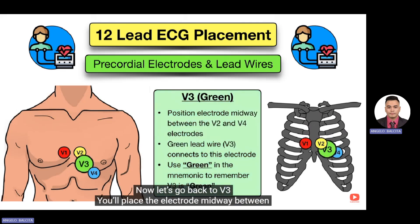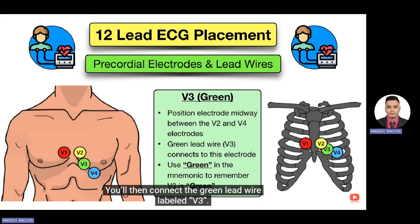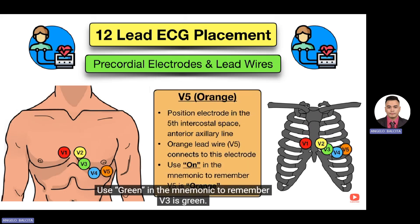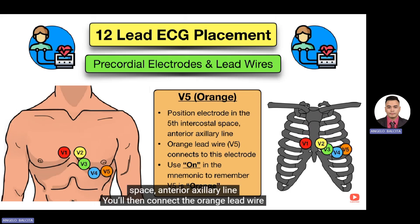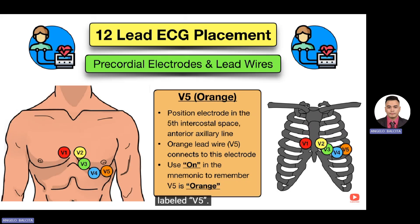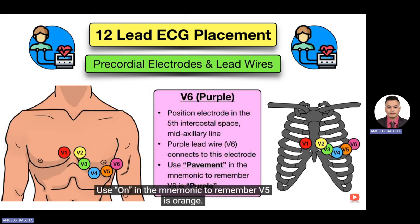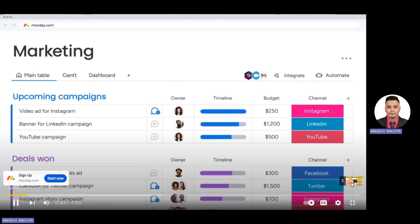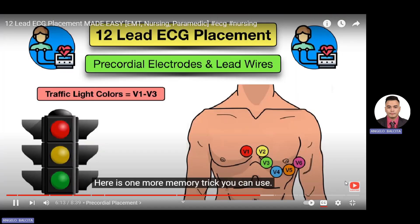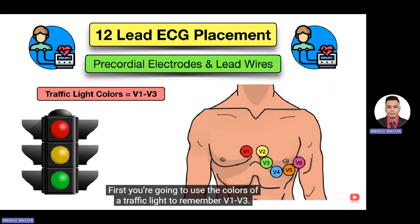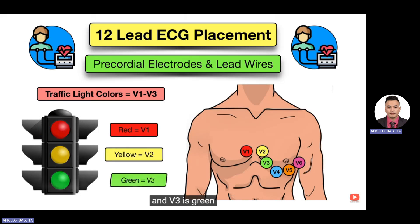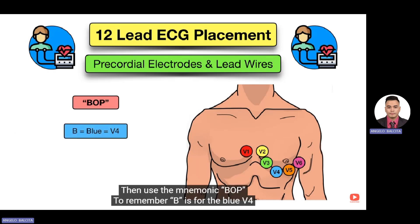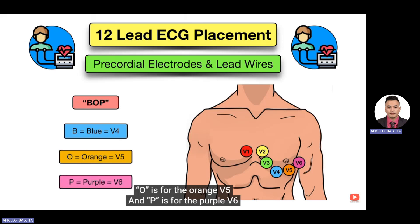Going back to V3: it is placed midway between V2 and V4, and its wire is green. V5 is orange — placed in the fifth intercostal space anterior axillary line. V6 is purple — placed in the fifth intercostal space mid-axillary line. Another memory trick: use the colors of a traffic light for V1 through V3 — V1 is red, V2 is yellow, V3 is green. Then use the mnemonic BOP: B for blue V4, O for orange V5, and P for purple V6.